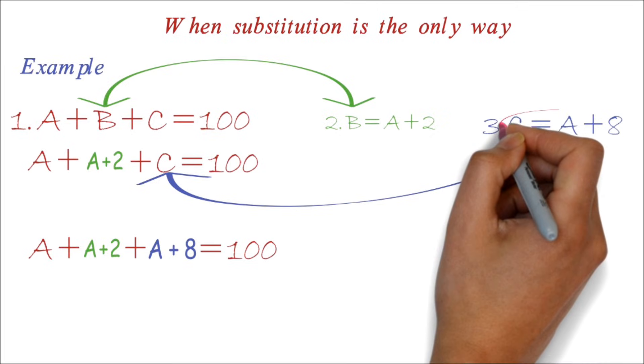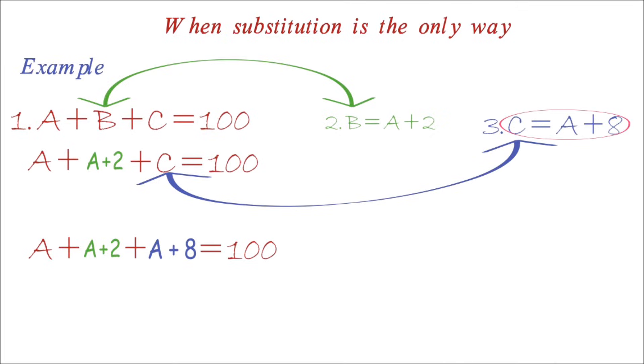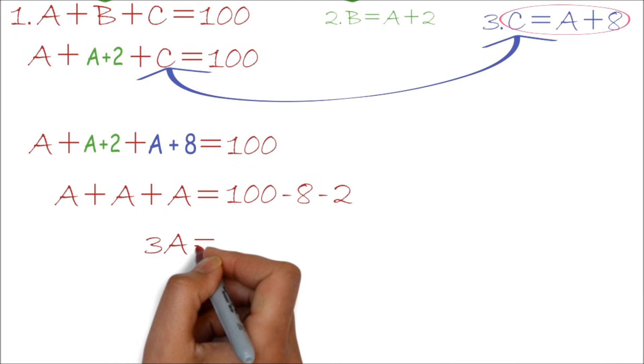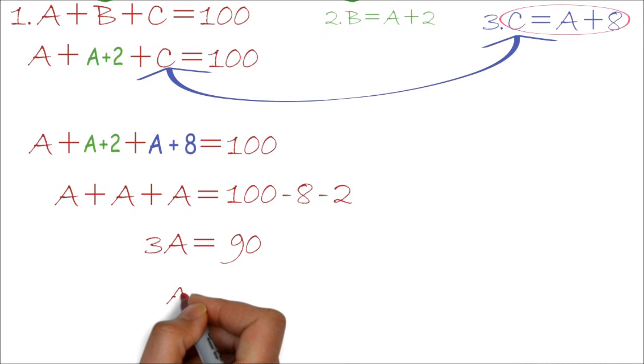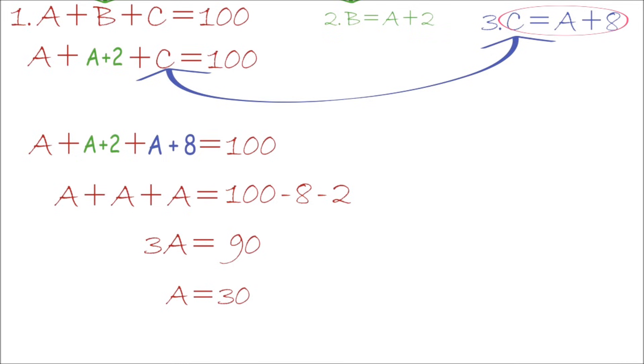Note that C equals A plus 8. Now, since the only letter or variable we have is A, we can group the terms and solve. We have A plus A plus A equals 100 minus 8 minus 2. Now, we have a value, so we can easily solve for B and C using equations 2 and 3 respectively.